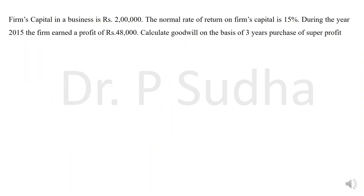I have taken one more question. The firm's capital in a business is 2 lakhs. The normal rate of return of the firm's capital is 15%. During the year, the firm earned a profit of rupees 48,000. Calculate goodwill on the basis of 3 years purchase on super profit.